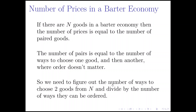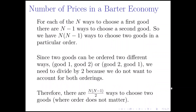What we need to do is figure out the number of ways to choose two different goods out of N, and then divide by the number of ways they can be ordered. Choosing one good and then another when there's N goods means the first good has N choices, and for each of those N ways, there are N minus one remaining choices for the second good. So there are N times (N minus one) ways to choose two goods in a particular order.